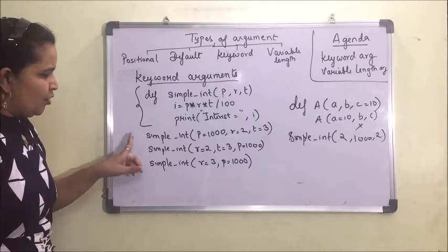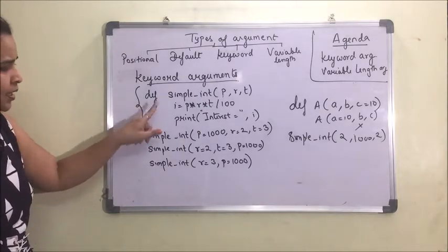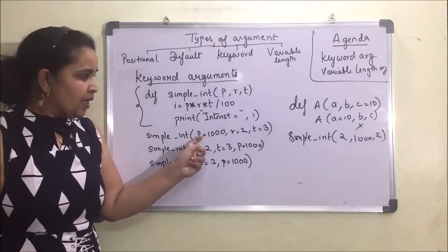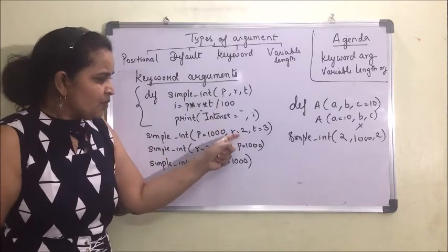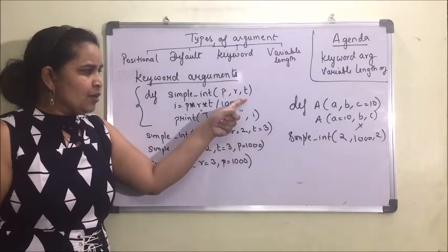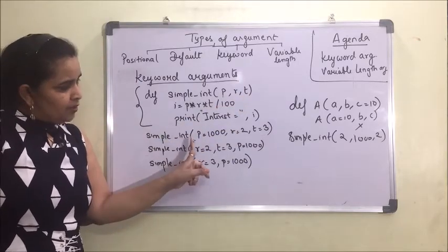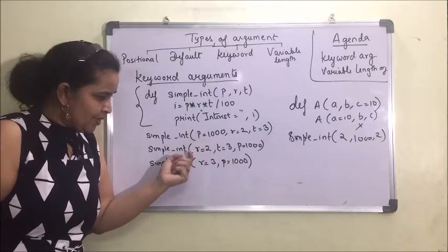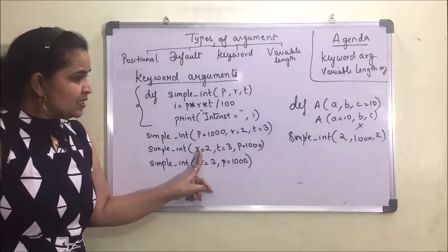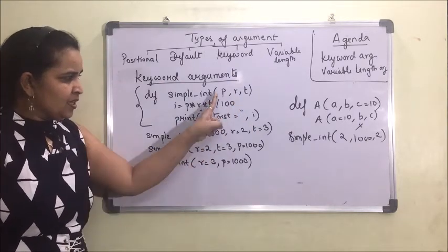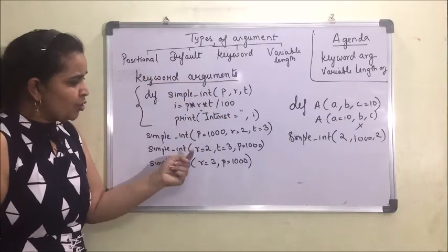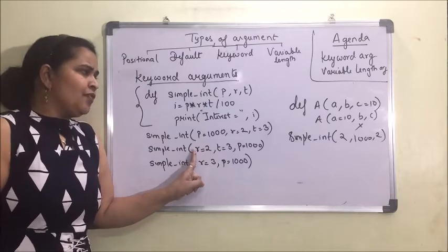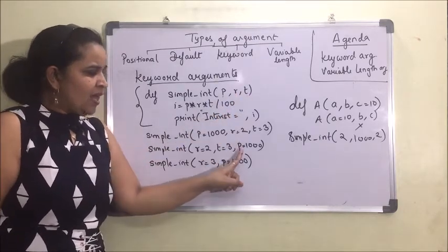When we call the function using keyword arguments, for example p=1000, r=2, t=3, the value 1000 will go to p, 2 will go to r, and 3 will go to t, based on the keyword names. If we change the sequence — say first r, then t, then p — the value will still go to the correct parameter by matching the keyword name, not the position.